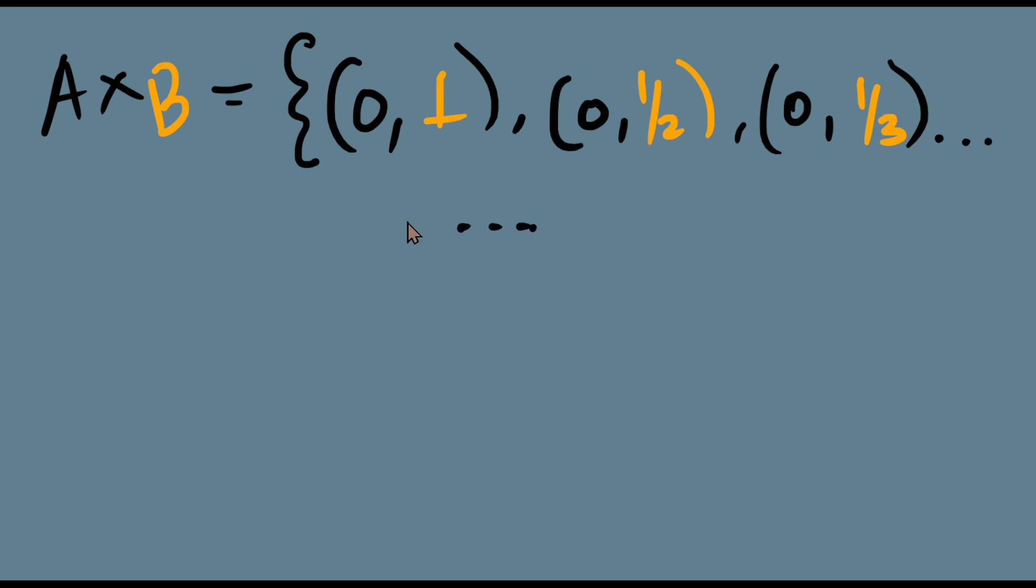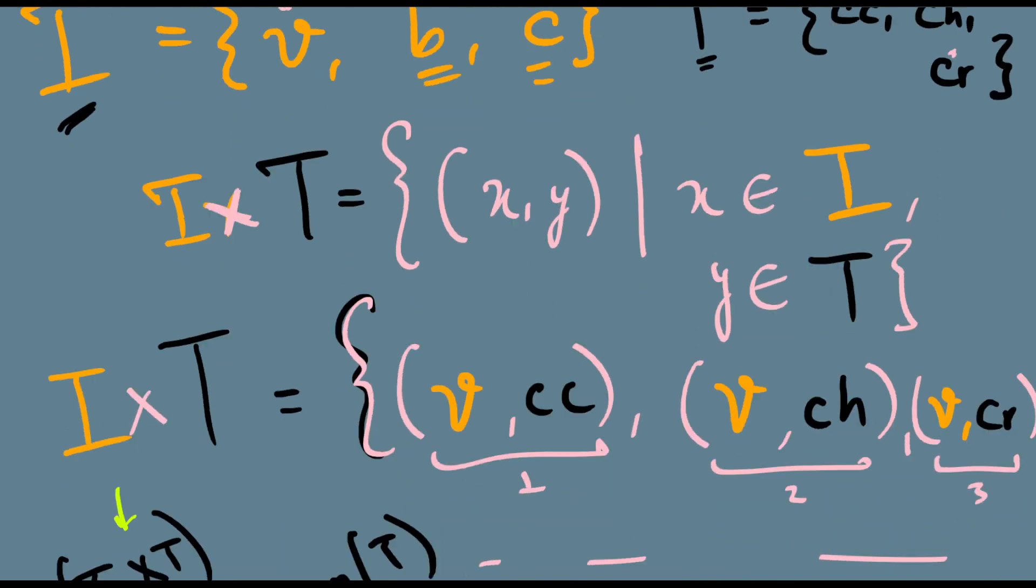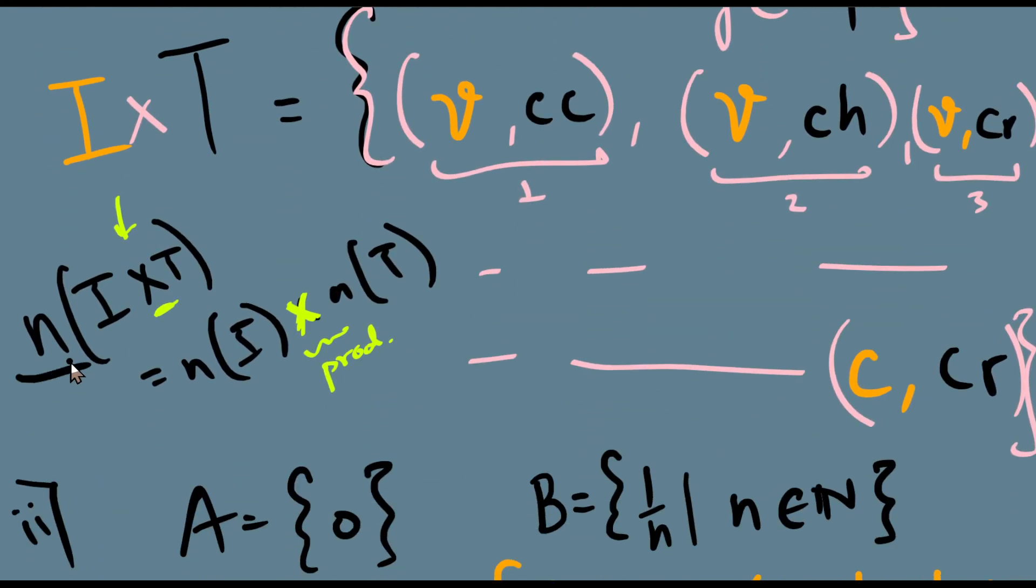And I'll have all (0, 1/k), and it will go on forever. So some random element in between would look like (0, 1/k). And we immediately see that A cross B is an infinite set. It is in logic with this statement, because one set actually turns out to be infinite.